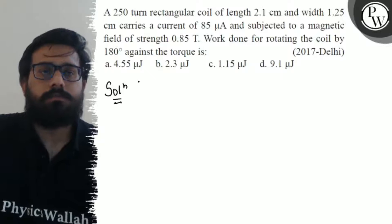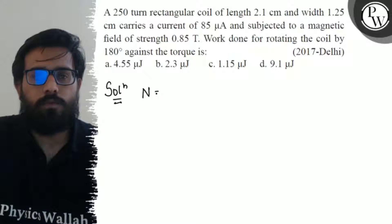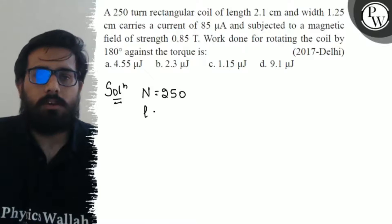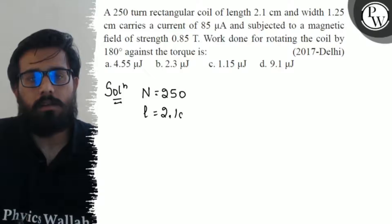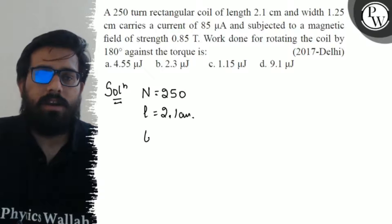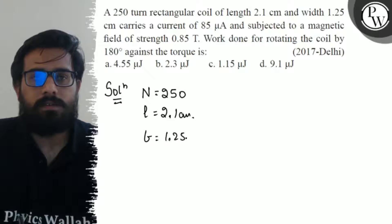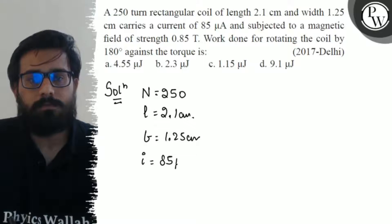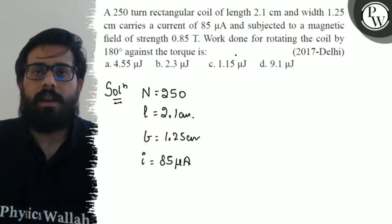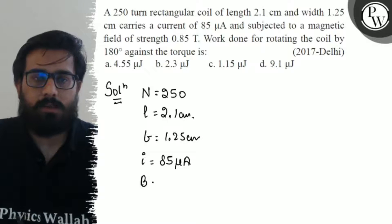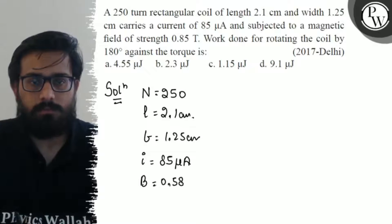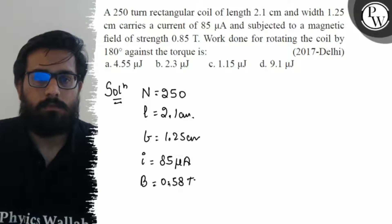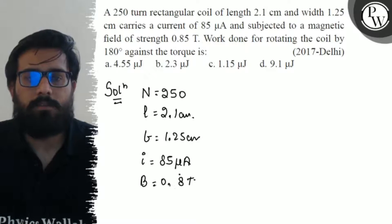Hearing this question, number of turns N equals 250, length 2.1 centimeters, width 1.25 centimeters. It carries a current of 85 microamperes and is subjected to a magnetic field B equals 0.85 Tesla.